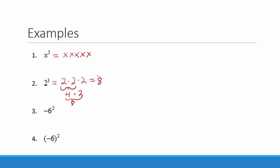In example 3, we have negative 6 squared. Interpreting this problem is very important. You need to understand that the square is only on the number 6 — it is not on the negative. We are going to square 6: 6 times 6, and bring the negative in front. So 6 times 6 is 36, and we carry the negative in front, giving us negative 36.